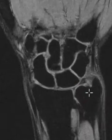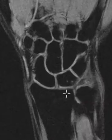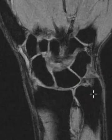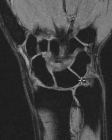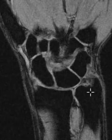Two findings: number one, scapholunate ligament tear; number two, positive ulnar variance and prominent thinning of the central disc. Over time this may lead to other problems. Thank you very much.